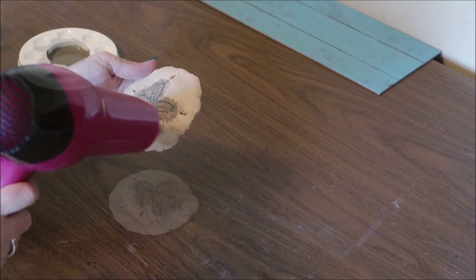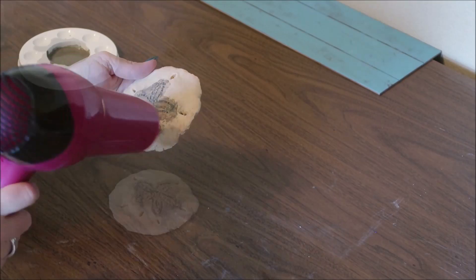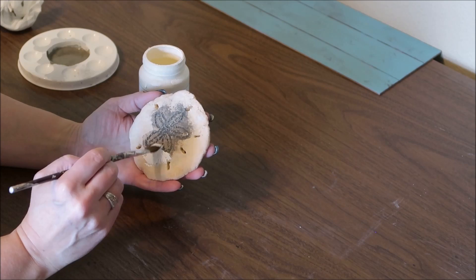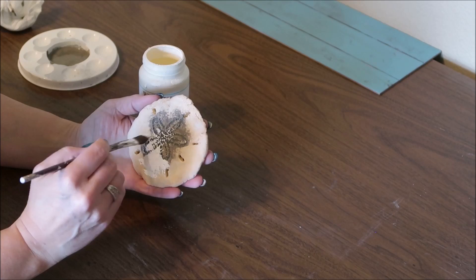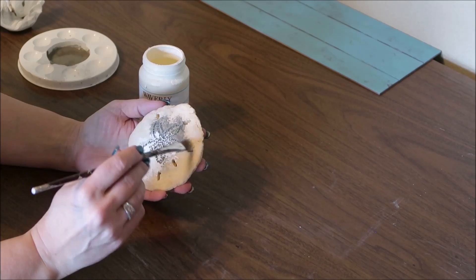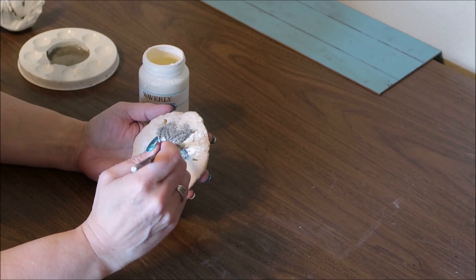Next, I'm going to paint over the sand dollar using Waverly's chalk paint in the color Ivory. And you'll notice that I'm being a little bit careful around the design. I don't want to get too much paint over those holes or the design because I don't want it to cover up the dark color too much. So I'm more dry brushing over the top of the flower design when I have a little bit less paint on my brush. And then I can always add a little bit more paint, but it's really hard to take it away.